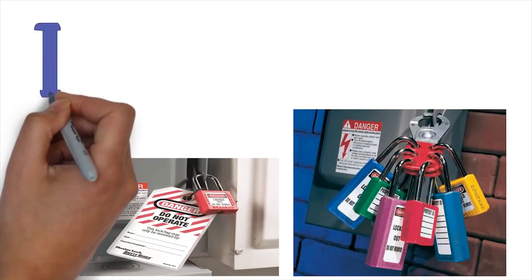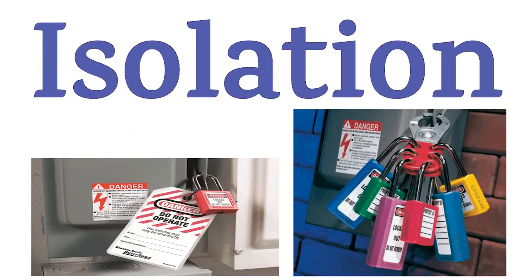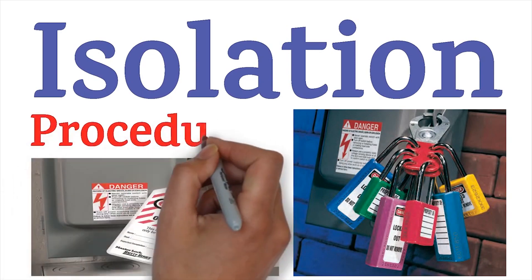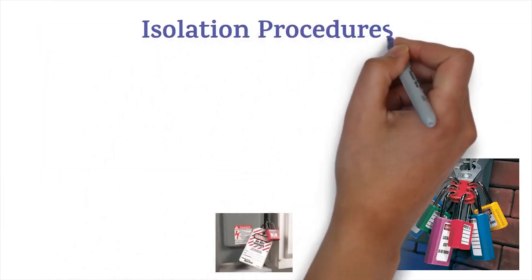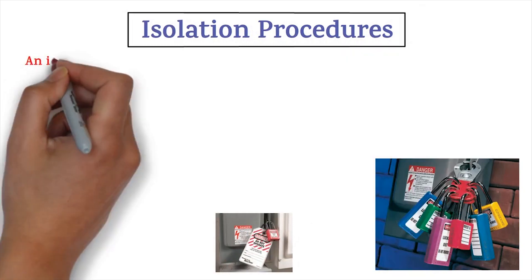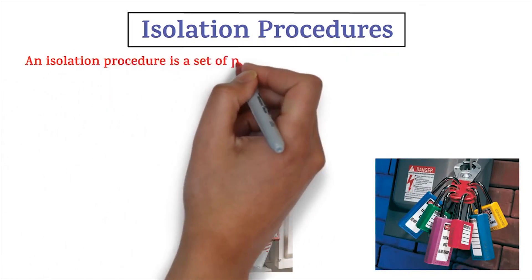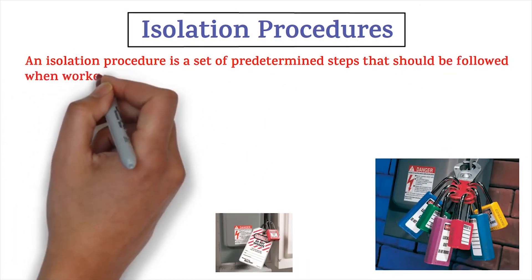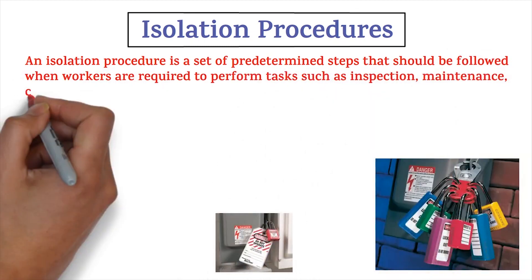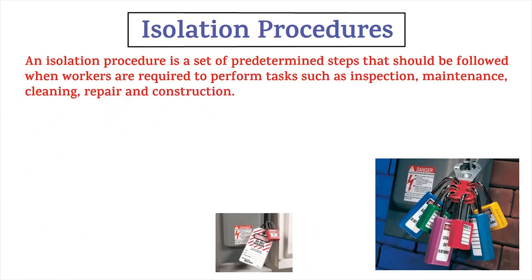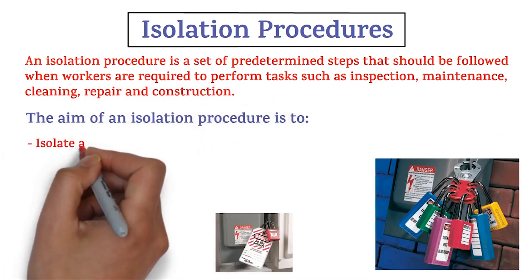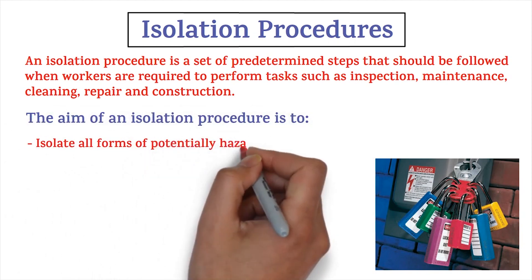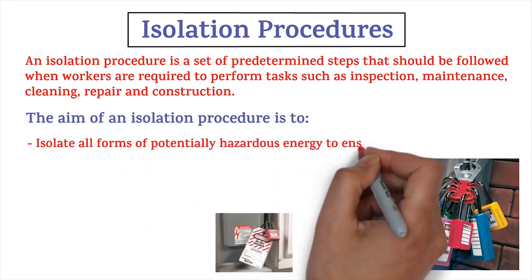Welcome to the Hopinfo channel. In this video, we are going to talk about isolation procedures in the workplace and lockout/tagout systems. An isolation procedure is a set of predetermined steps that should be followed when workers are required to perform tasks such as inspections, maintenance, cleaning, repair, and construction.